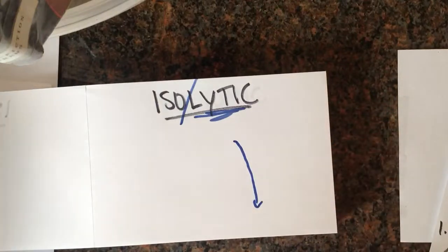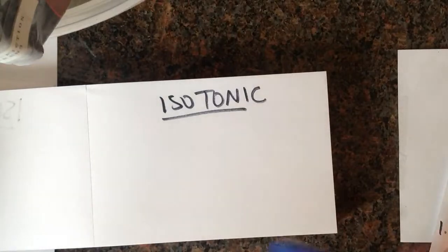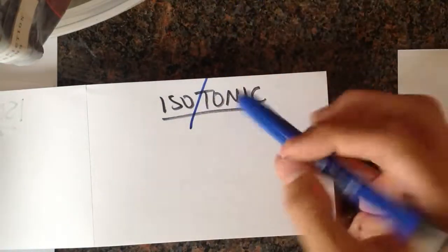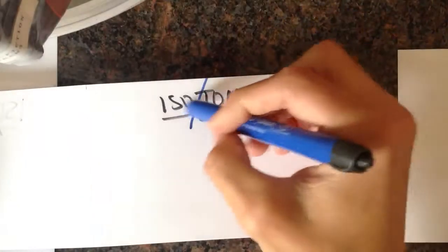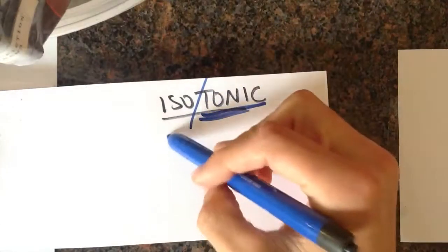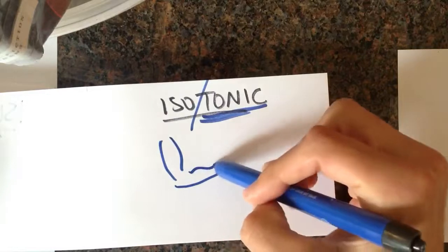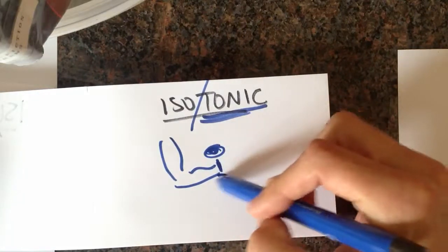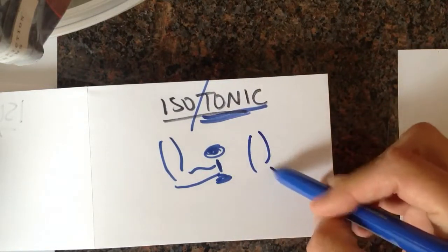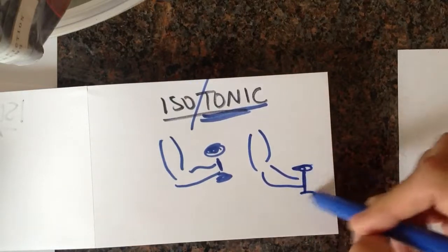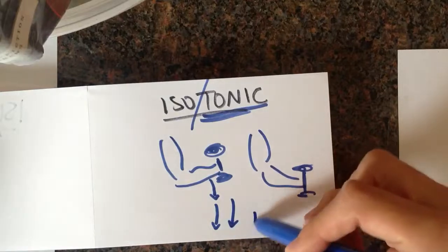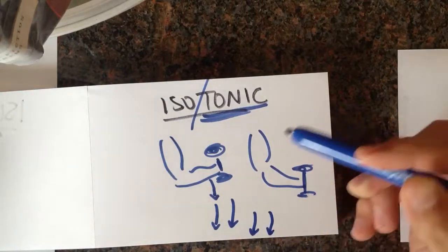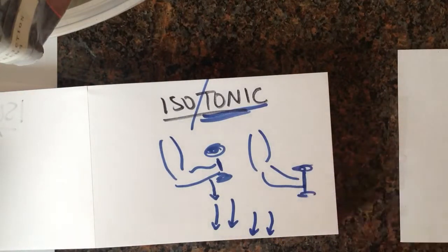And if you go down slow at a constant rate, that's known as isotonic. 'Tonic' is going to be like tone — muscle tone — the tone is going to be the same. So as you take the bicep curl from up here and bring it down, you're going down at the same rate the whole way.